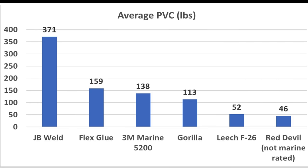In some marine applications, forming a bond between two smooth, unsanded surfaces may be necessary. The PVC tensile strength test highlighted the ability of the construction adhesives to do just that. Not surprisingly, JB Weld delivered more than twice the tensile strength compared to the construction adhesives. However, Flex Glue did very well on this test, delivering 159 pounds compared to 138 for 3M and 113 for Gorilla. Even after eight days, F-26 and Red Devil didn't fully cure, or else they would have probably done quite a bit better.